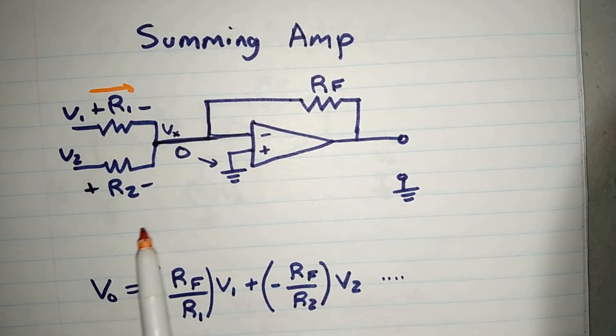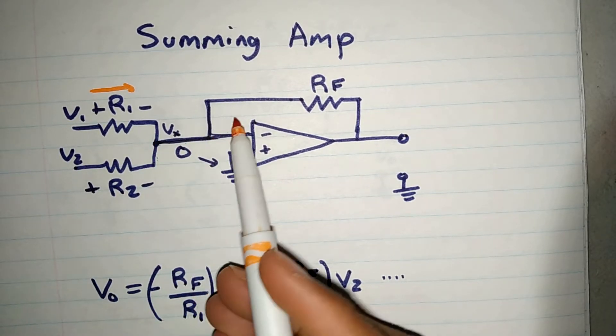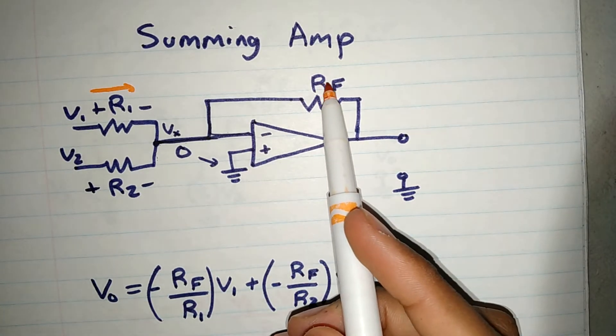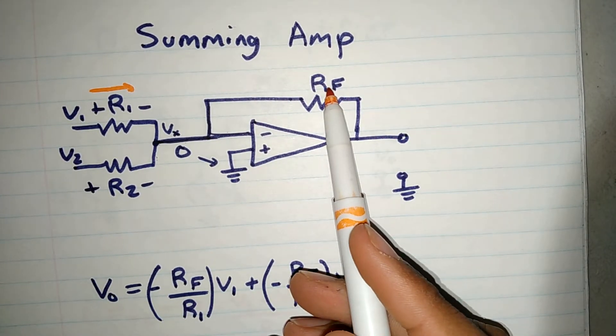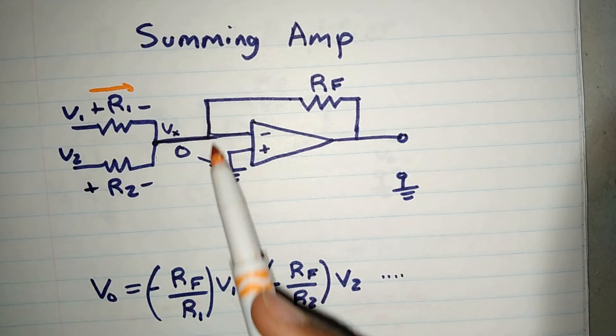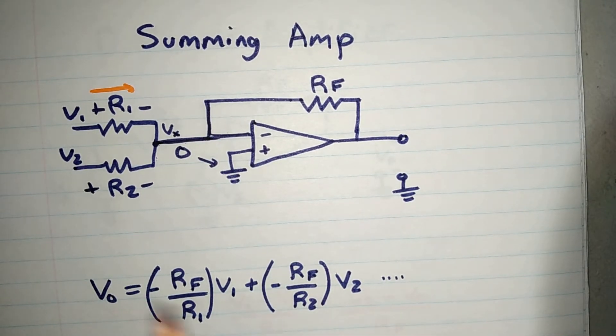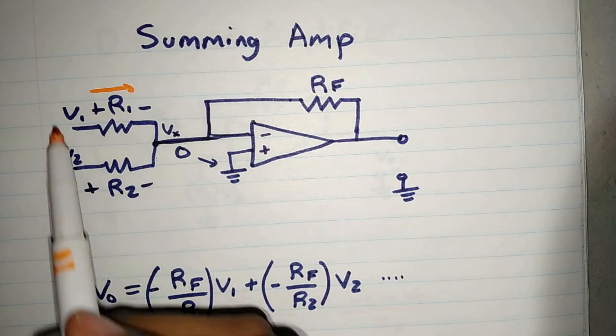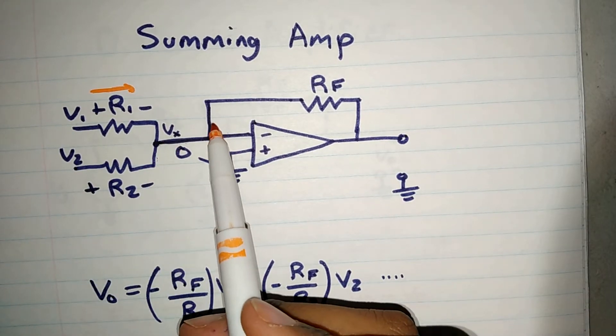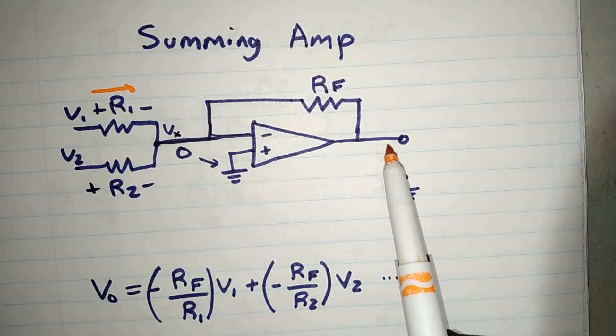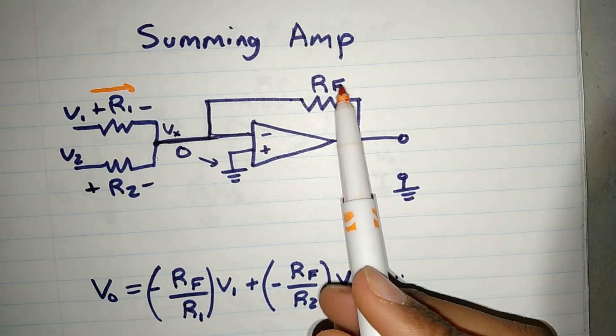And then these currents will all add up at this node. And that will equal to RF, negative Vout over RF, because this is zero. And so when you rearrange the equation, all these currents coming in would equal to the current coming out, which is negative V over RF, as I stated before.